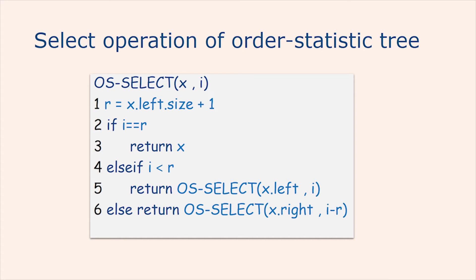In line 1 of OS-Select, we compute r, the rank of node x within the subtree rooted at x. The value of x.left.size is the number of nodes that come before x in an inorder tree walk of the subtree rooted at x. Thus, x.left.size + 1 is the rank of x within the subtree rooted at x. If i equals r, then node x is the ith smallest element and so we return x in line 3. If i is less than r, then the ith smallest element resides in x's left subtree and so we recurse on x.left in line 5.